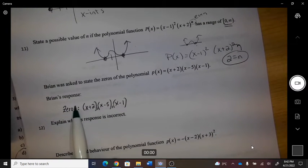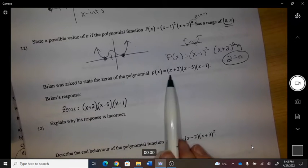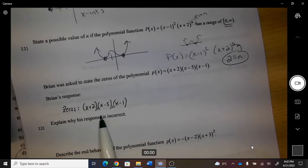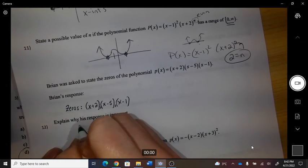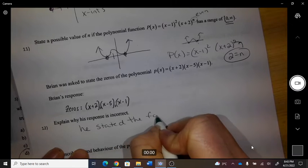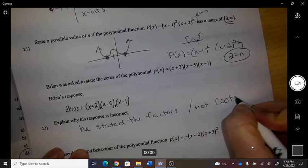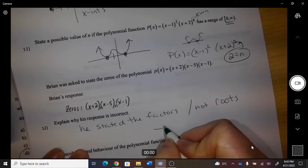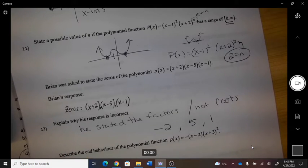Brian was asked to state the zeros of this polynomial, and his response was this. What is his error? He stated the factors, not the roots. So he should have said negative 2, 5, and 1 are the roots.